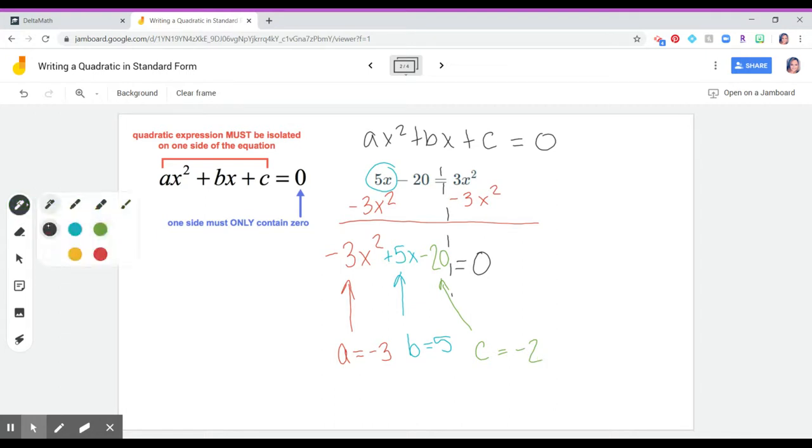Again, it's really important that we have x squared, x, no x, then equal to zero.